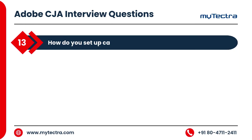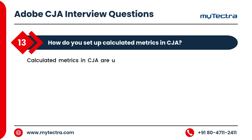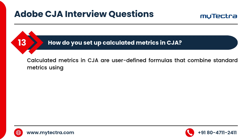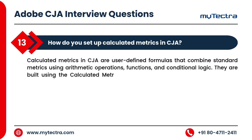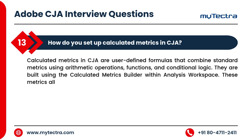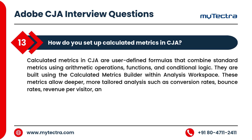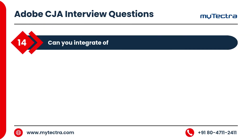How do you set up calculated metrics in CJA? Calculated metrics in CJA are user-defined formulas that combine standard metrics using arithmetic operations, functions, and conditional logic. They are built using the calculated metrics builder within Analysis Workspace. These metrics allow deeper, more tailored analysis, such as conversion rates, bounce rates, revenue per visitor, and more.